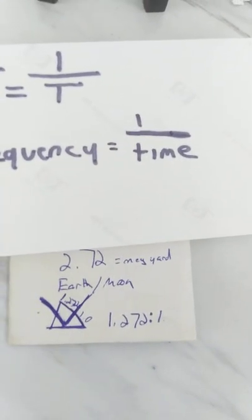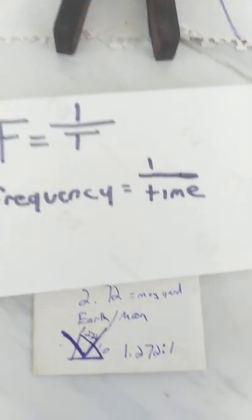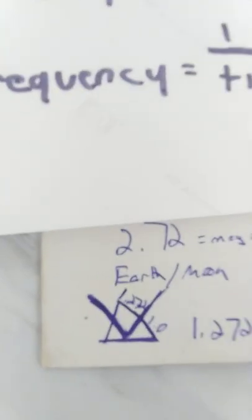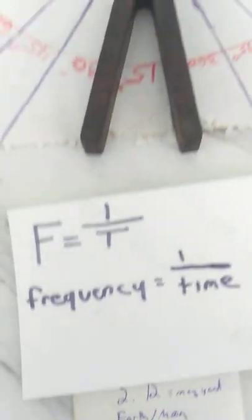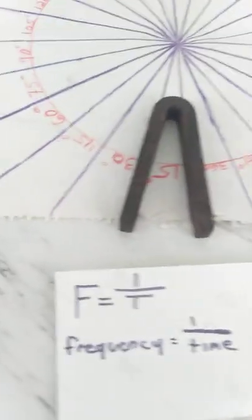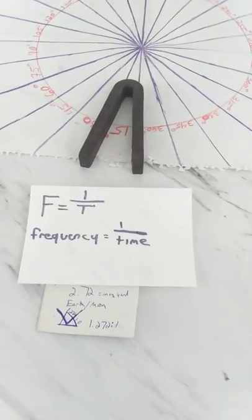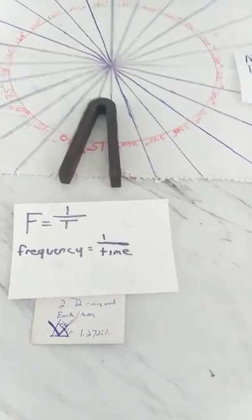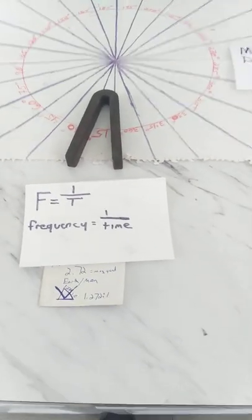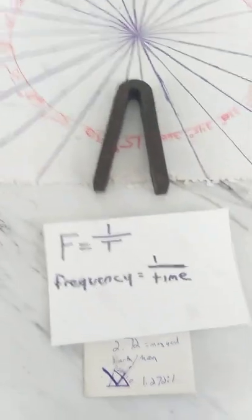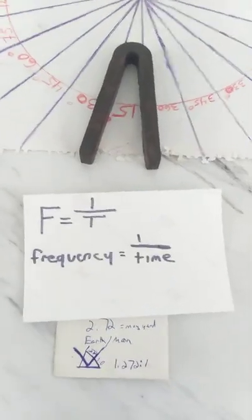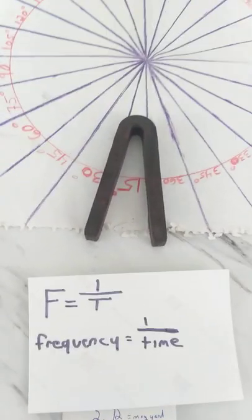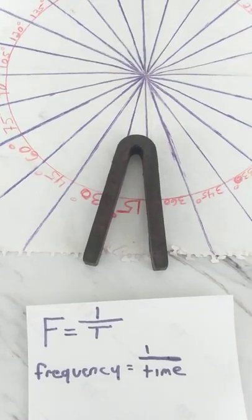It's showing you the right-angle relationship between the earth and the moon — the 1.272-to-1 ratio and how it bisects. Ed is using this whole right-angle relationship between the earth and the moon, and this is a very important factor into this whole thing. It all makes more sense the further on I go.